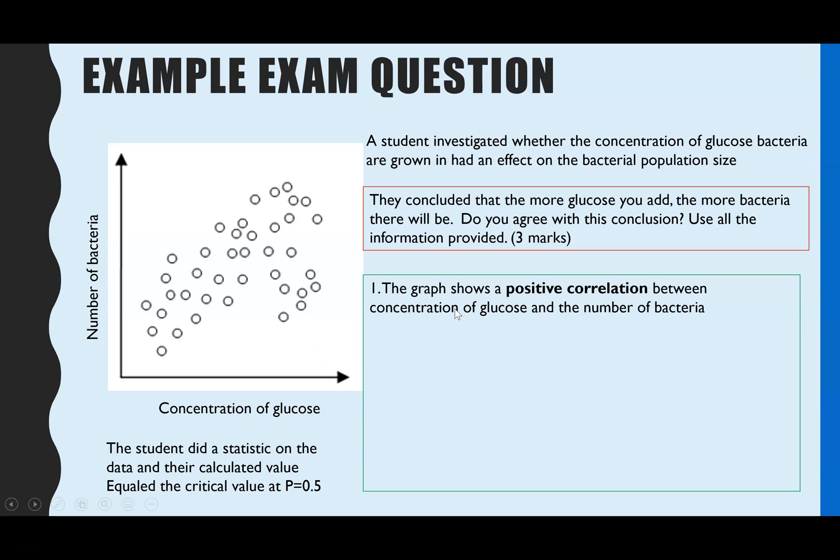So in this example, the first thing is what supports that conclusion. So the graph does show a positive correlation between concentration of glucose and the number of bacteria. So that is one piece of supporting evidence.